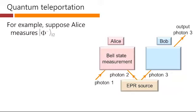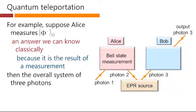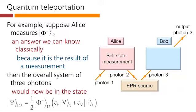For example, suppose Alice measures this particular Bell state for photons 1 and 2. We can know this answer classically. This is a measurement, it gives a classical result. And hence, we know that the overall system of three photons would now be in the state just the part corresponding to that particular Bell state.